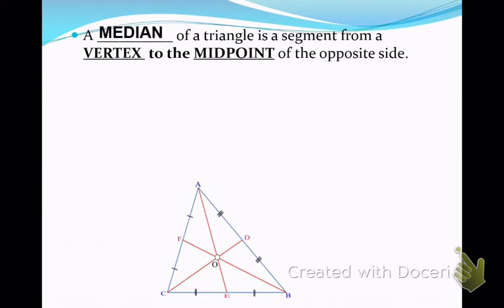Median. The median of a triangle is a segment from a vertex to the midpoint of the opposite side. You need to remember that a mid-segment is a segment that joins two midpoints of sides. The median goes from a vertex to a midpoint of the opposite side.